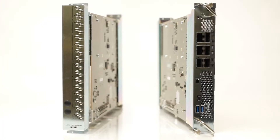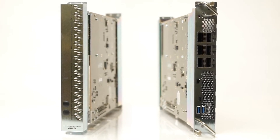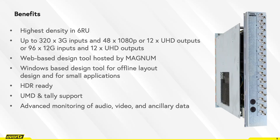Some of the benefits of EVVIP app 100G ST2110 are that it provides the highest density in 6RU — up to 320 3G inputs and 48 1080p outputs, or 12 UHD outputs, or 96 12G inputs and 12 UHD outputs.